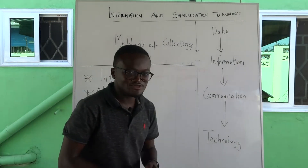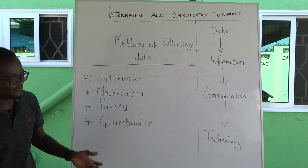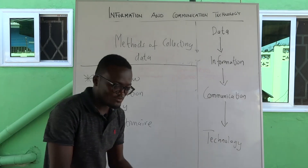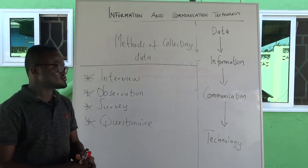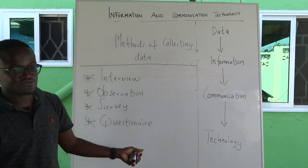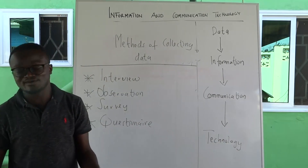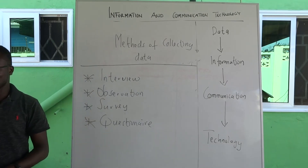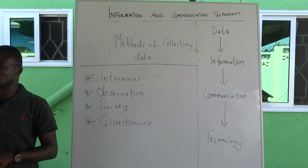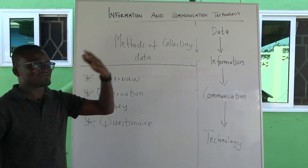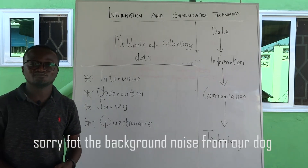To summarize: first, we talked about data — data are raw facts such as numbers, alphabets, symbols, etc. We then talked about information — information cannot just come about on its own; it is data that is transformed through a process to become information. We talked about two sources of data: primary source and secondary source. And we talked about four main methods of collecting data: interview, observation, survey, and questionnaire. If you have any questions, you can post them and we will answer you. Thank you very much for watching.